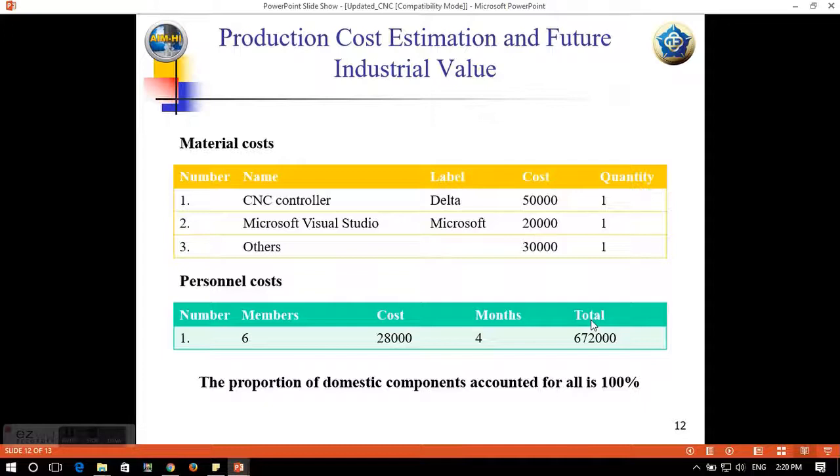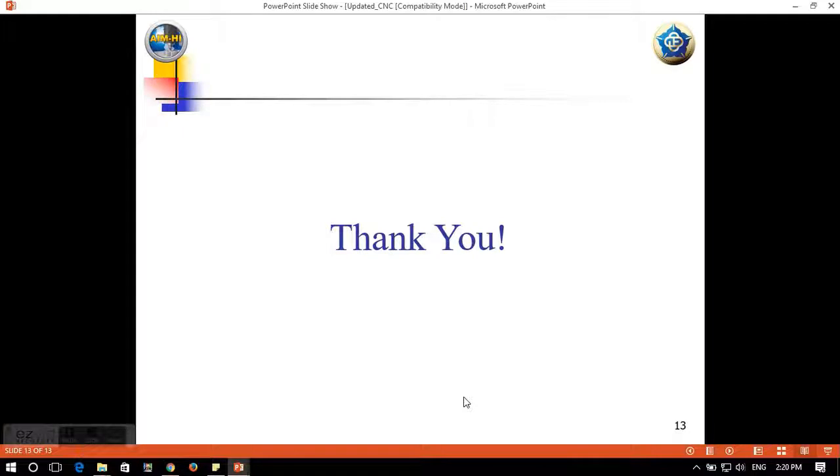And here is our reference. And when we come to the production cost estimation and future industrial value. Here is the table of material cost. Of course, we need CNC controller Delta. And we need some software and some mechanical structure. And here is personnel cost. And all of these things are domestic components.